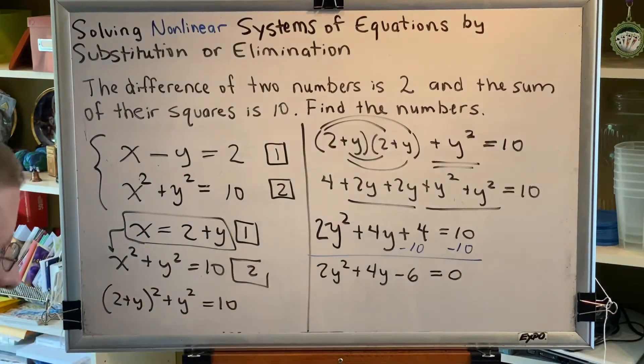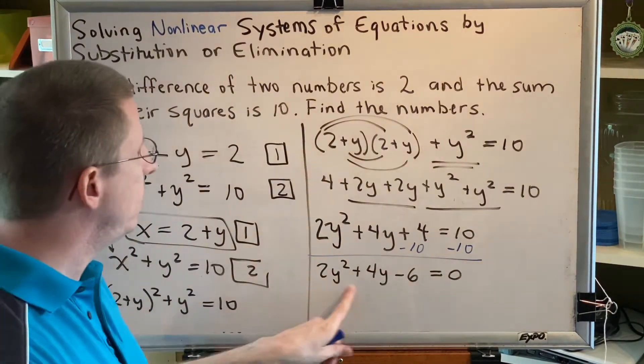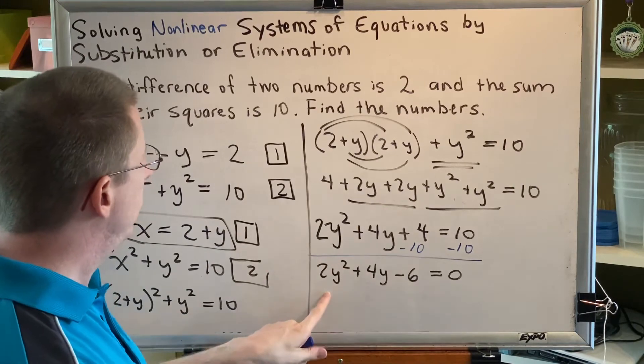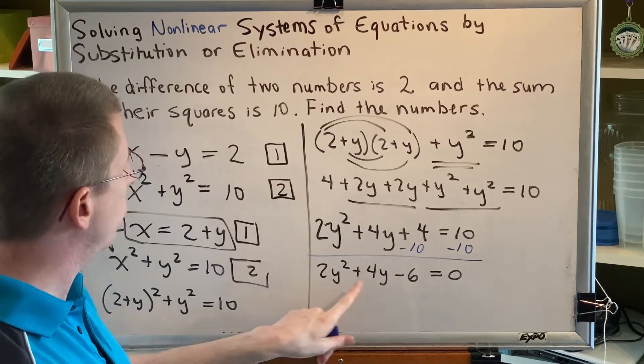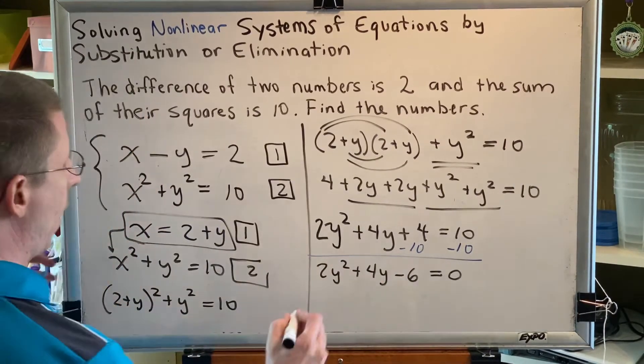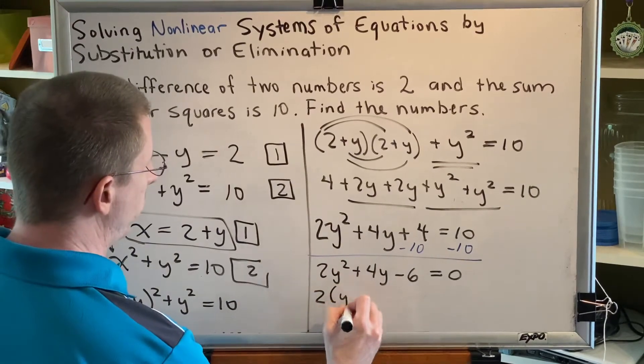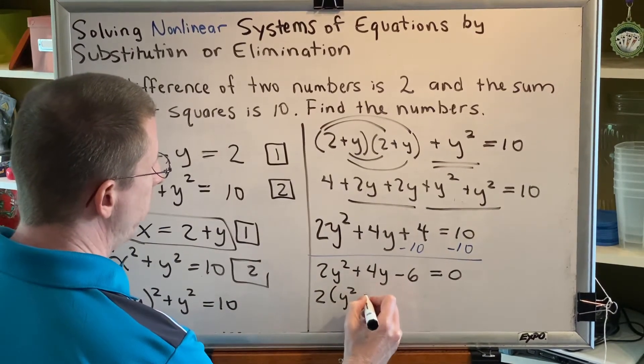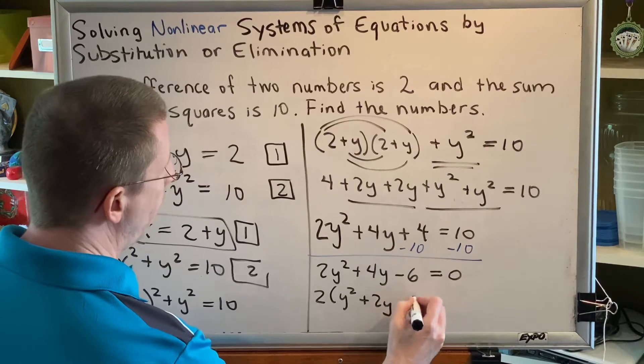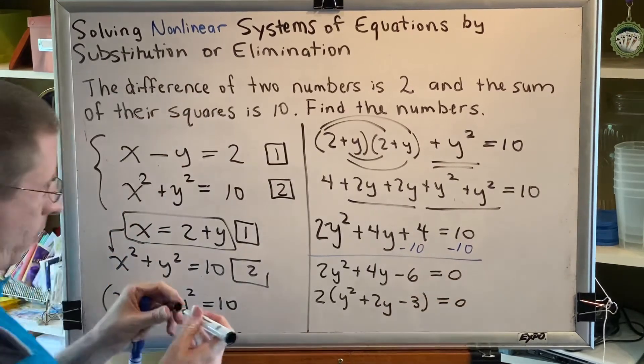Let's begin the factoring process. First step, descending order. Check. Second step, GCF. Well, these are all divisible by 2. Let's take out the 2. So that would leave us with 2(y squared plus 2y minus 3) equals 0.